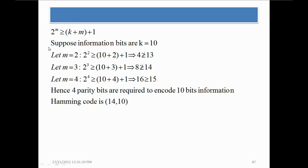Now there is another example using the same formula. Suppose information bits k is equal to 10. Trying m equal to 2 and m equal to 3 — neither satisfies the equation. But if we choose m equal to 4, it gives us 16 is greater than or equal to 15, which is true. Hence 4 parity bits are required to encode 10 bits of information, giving a (14,10) Hamming code — 4 bits are added to the 10 information bits making a 14-bit code word.